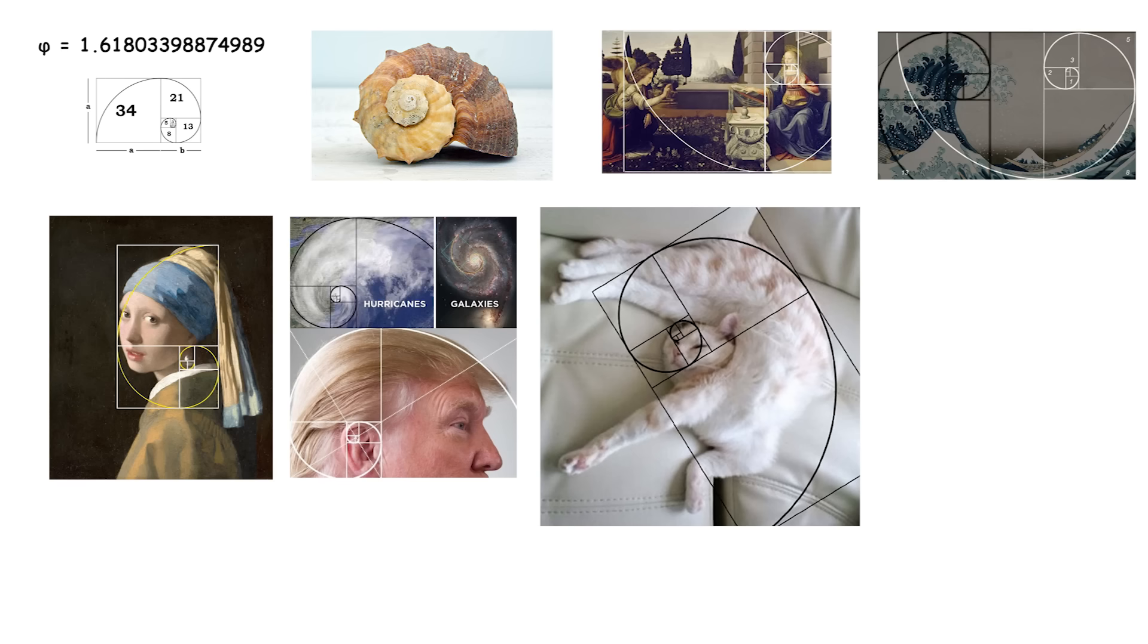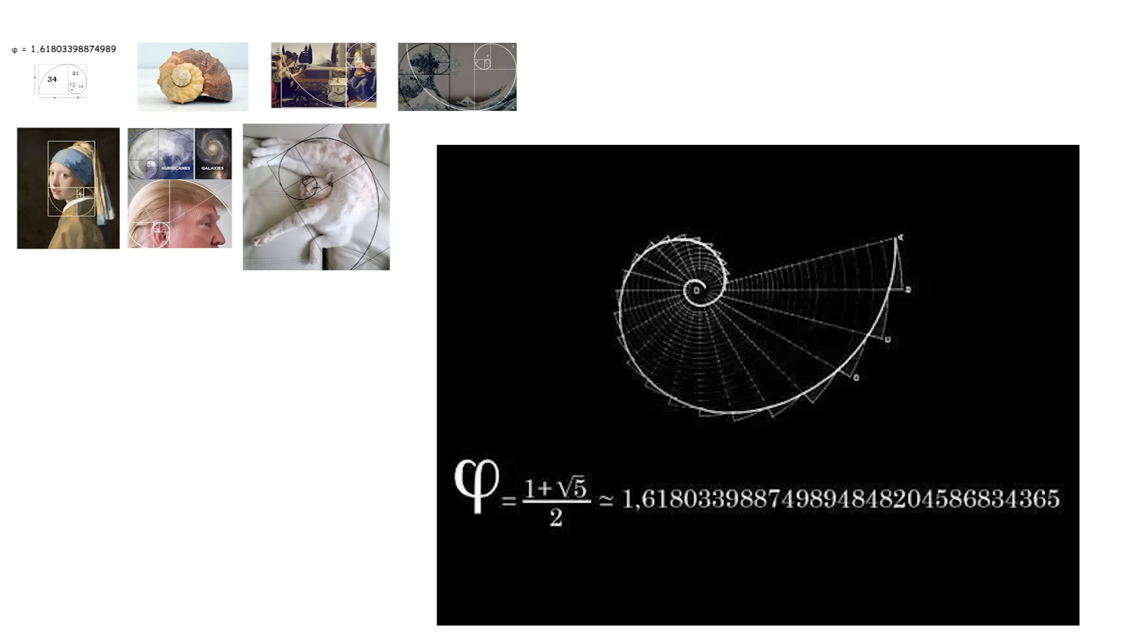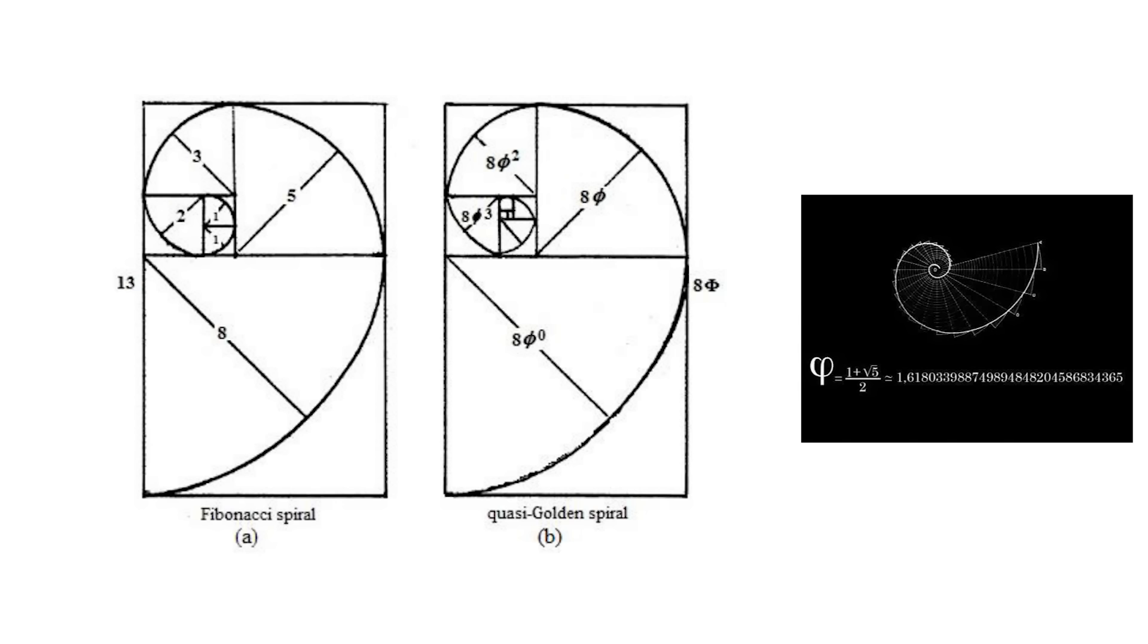The golden ratio is an irrational number, meaning its decimal representation goes on forever without repeating, and it is closely related to the Fibonacci sequence, another important mathematical concept.